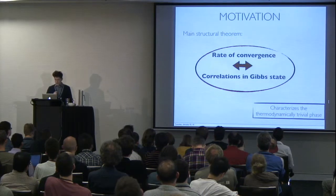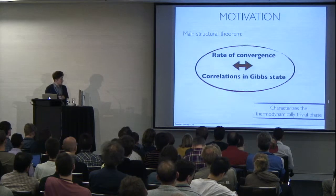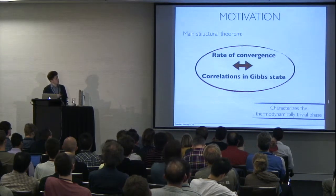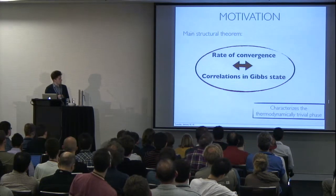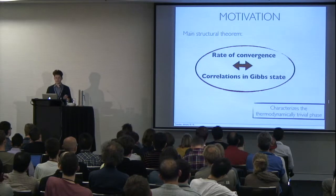is going to be very intimately related with the correlations within this Gibbs state. In particular, what I'm going to show is that if the rate of convergence is rapid, then correlations can't build up in your system.